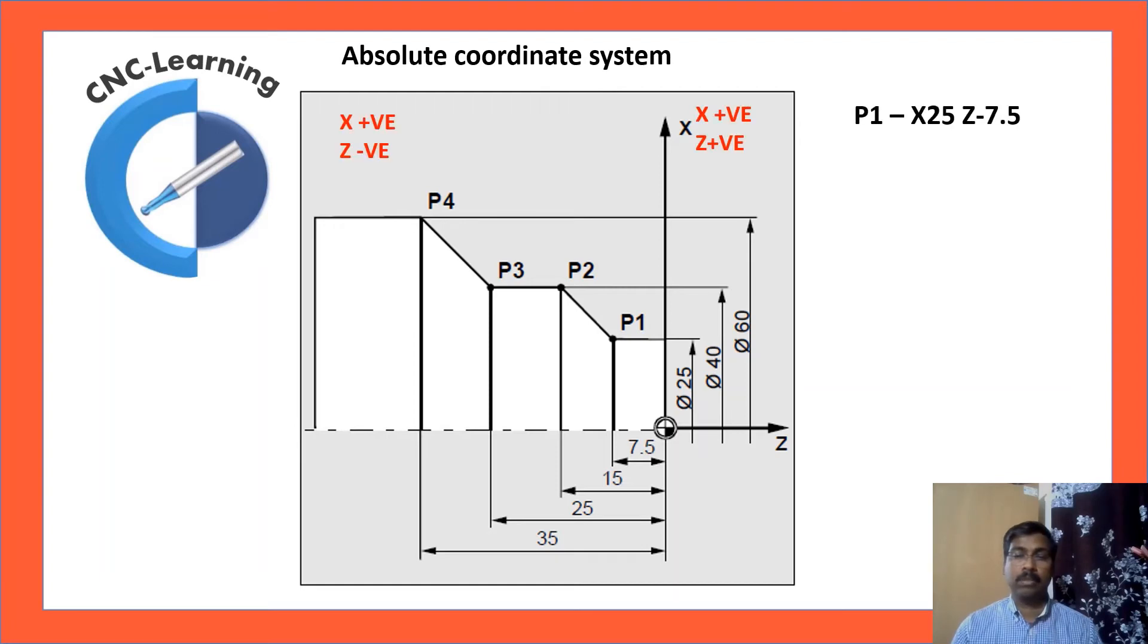Now, absolute coordinate system say P1 in turning. P1 X is diameter and Z is length. So, X25 and Z-7.5. P2 is X40, Z-15, diameter is 40 and distance is 15. P3 is X40, Z-25. P4 X60, Z-35. So, these are the absolute coordinate system for turning.